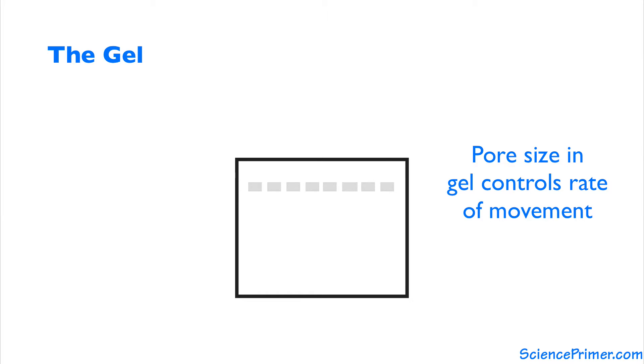The size of the pores control the rate at which the DNA moves. Smaller pores means slower movement. The length of DNA fragments also influence the rate at which they are pulled through the gel, with longer fragments moving more slowly.